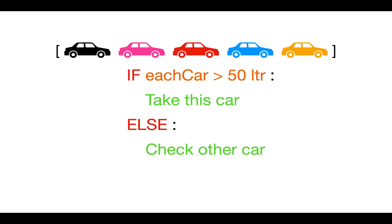All the cars are elements of an array and you are performing the same operation on each element — for each car you check the fuel, and if it is greater than what you expect you take that car, else you leave it. That is how for loops work. In JavaScript we have two types of loops: for loop and while loop. Both work on the same principle under the hood, but the way of writing code is a little different.